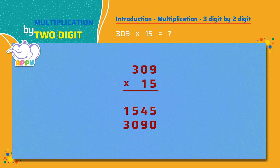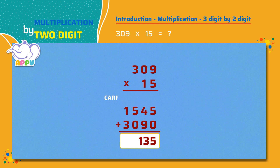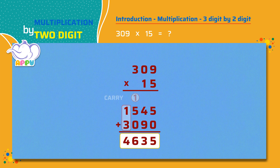Lastly, we add the numbers. Five plus zero equals five. Four plus nine equals thirteen. We keep three and carry one. One plus five plus zero equals six. One plus three equals four. So the answer is four thousand six hundred thirty-five.